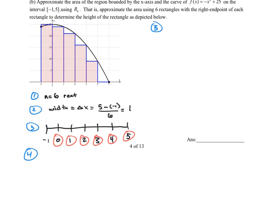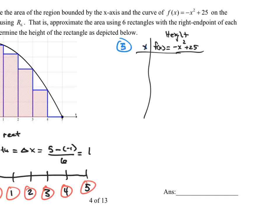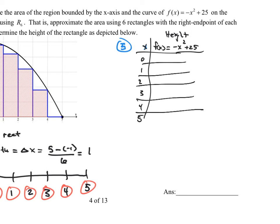Step 5: plug each of those values into the function f(x) = negative x squared plus 25 to determine the height. Using the table feature on my calculator — I already have the function entered — I plug in 0 and get 25; 1 and get 24; 2 and get 21; 3 and get 16; 4 and get 9; and 5 and get 0. Those are the heights of the six rectangles.